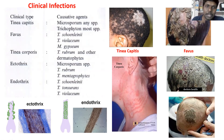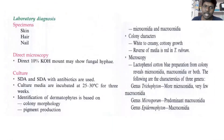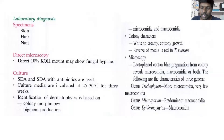Let us see the laboratory diagnosis and characteristic features of each fungal species. In laboratory diagnosis, the first step is specimen collection — we take either skin, hair, or nails. Then we perform direct microscopy by preparing a 10% KOH mount, which allows us to see fungal morphology. We also go for culture on SDA medium at 25–30°C for three weeks. The fungal growth can be identified depending upon colony morphology, pigment production, and the presence of microconidia or macroconidia.